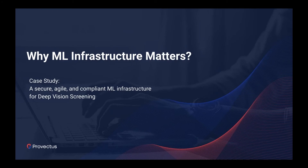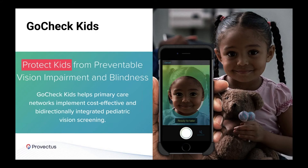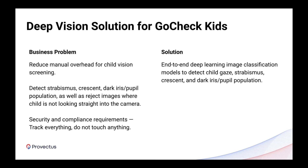We'd like to start by answering the 'why' question — talking about motivation. Let's visualize the final outcome and benefits of having machine learning infrastructure, then work backwards discussing what options are needed to achieve that goal. We will use a real-world case study to explain this 'why' aspect.